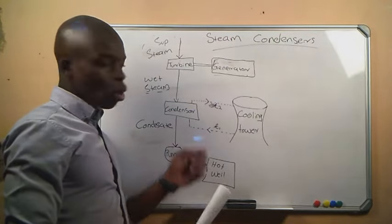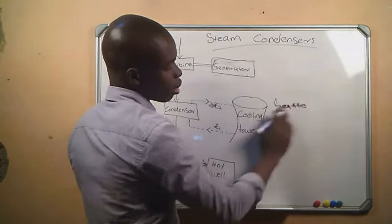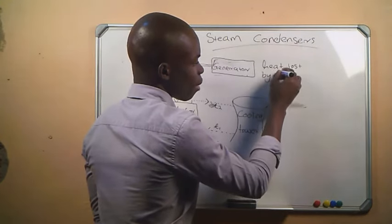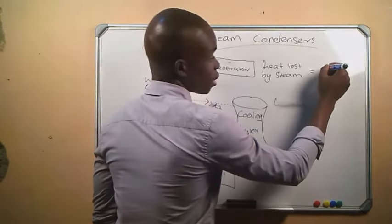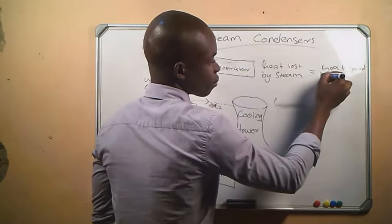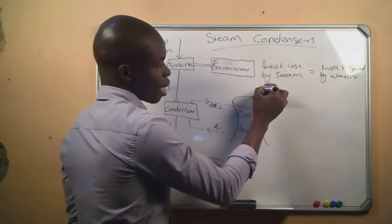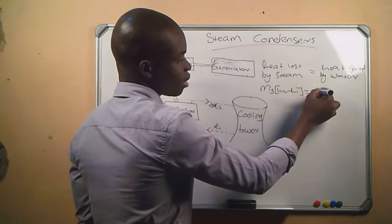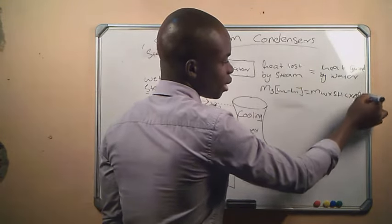Between the steam and the cooling water from the cooling tower, the heat lost by the steam equals the heat gained by the cooling water. This gives us the formula: mass of steam × (h2 − h1) = mass of water × specific heat capacity × change in temperature.